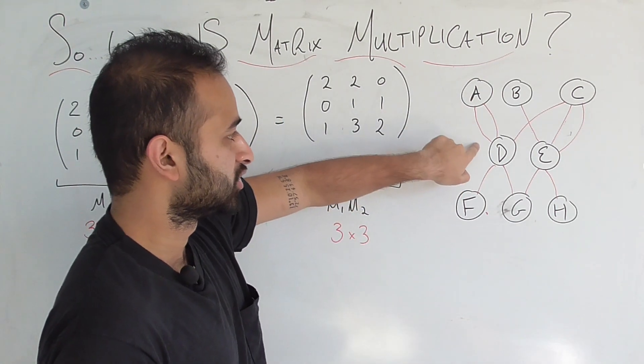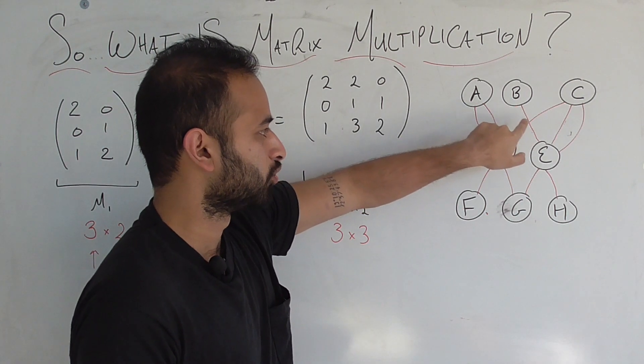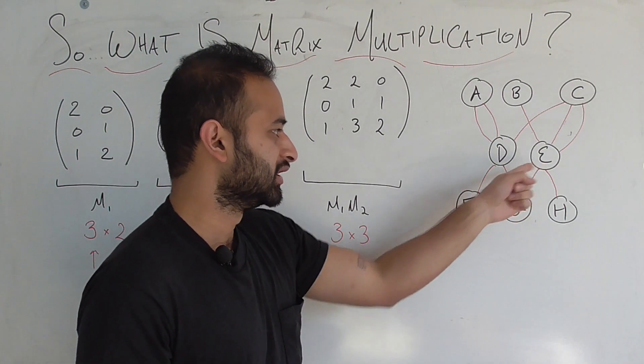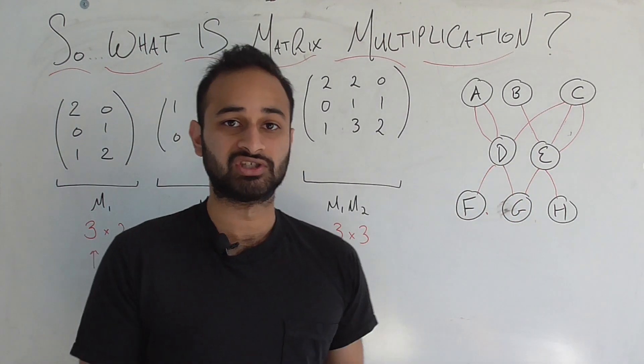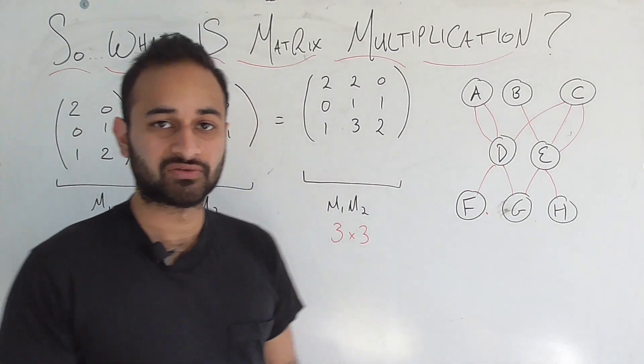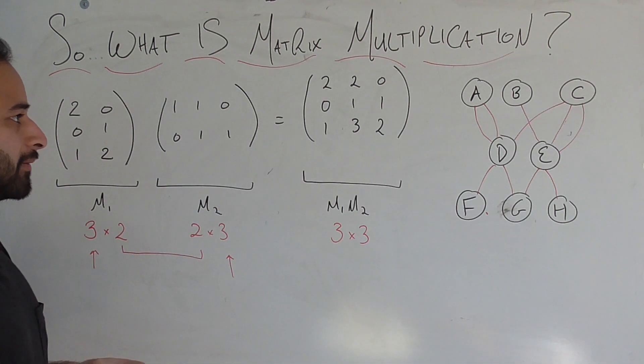So for example, A to D, there's two ways you can get there, which are these two red lines. From B to E, there's just one red line. And for example, from E to F, there's no way to get from E to F. There's no line connecting them, so that will be zero. Now if you take this picture, you're going to notice that it's fully encoded in these two matrices here, and we're going to write some extra letters here to show that.